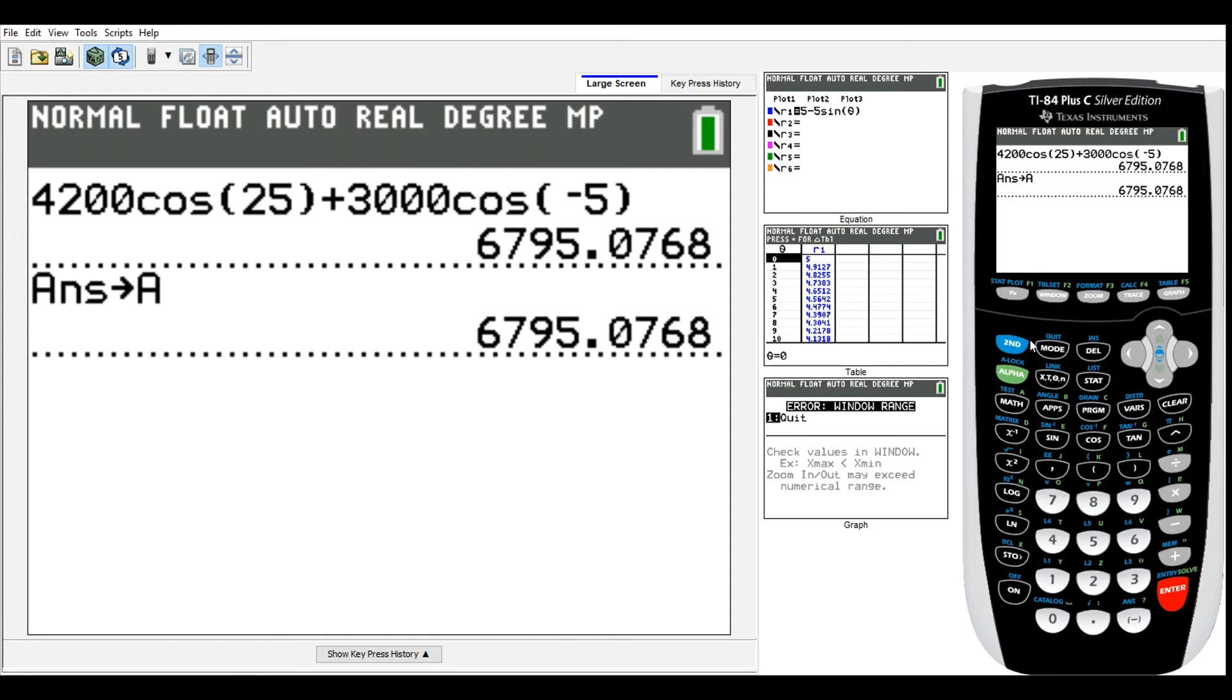Okay, so there's that. And then let's do the vertical component, which should look the same other than with sines. So if I hit 2nd, enter twice here, I should be able to get that to pop back up. And I can just replace these cosines with sines.